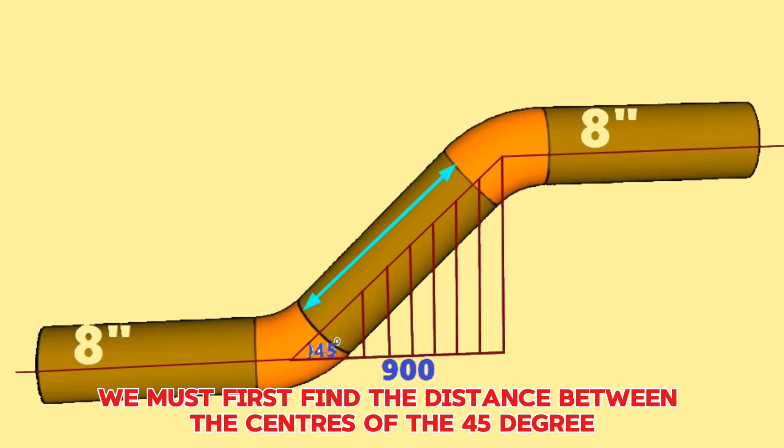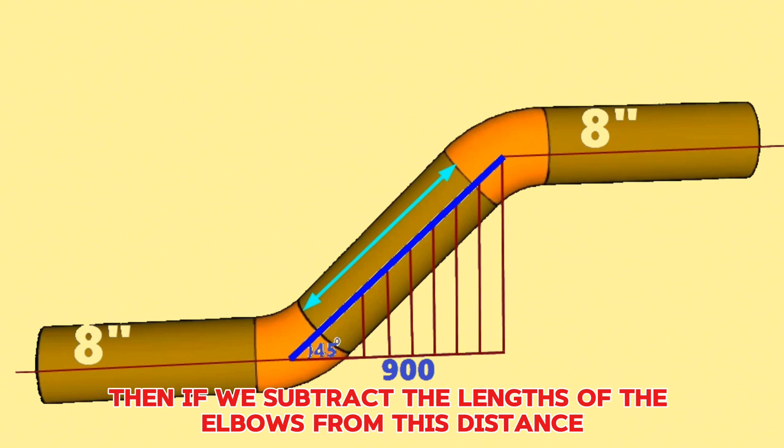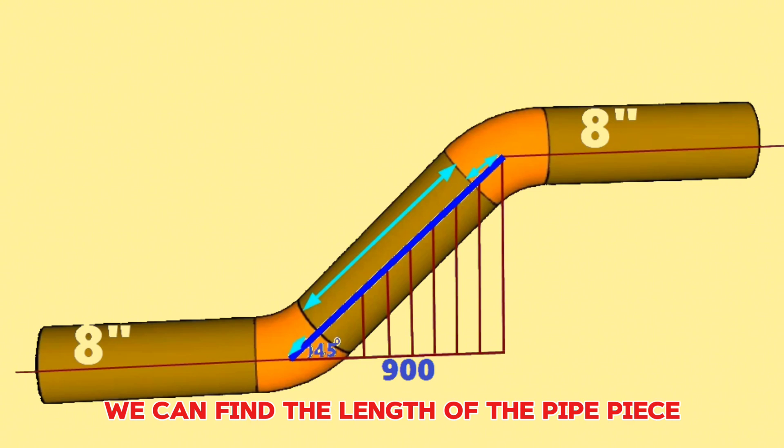For this, we must first find the distance between the centers of the 45-degree butt weld elbows. Then, if we subtract the lengths of the elbows from this distance, we can find the length of the pipe piece.